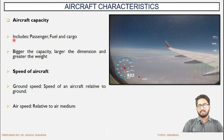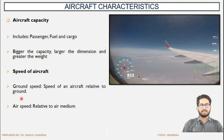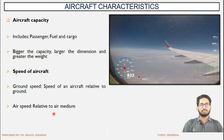Next is the aircraft capacity — it includes passenger, mail, and cargo. How much passenger, fuel, or cargo an aircraft can accommodate is the capacity. Bigger the capacity, larger the dimension and more the speed. Next is the speed of the aircraft. There are two types: ground speed — the speed of an aircraft relative to the ground — and air speed, relative to the air medium. Depending upon the direction of the wind, the speed of the aircraft in the air medium will change.